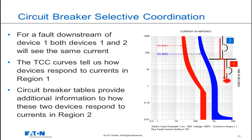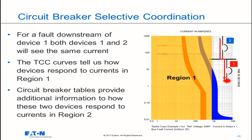Time current characteristic curves, as those shown here, are what you will see when reviewing a selective coordination study. This plot shows how these two devices relate to each other and respond when a current passes through them. The curves tell us clearly what happens for those currents in zone 1. Circuit breaker tables provide additional information beyond what the TCC curves show us for those fault currents in region 2.